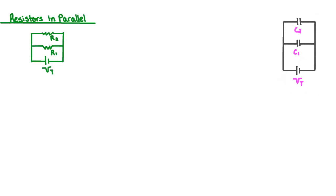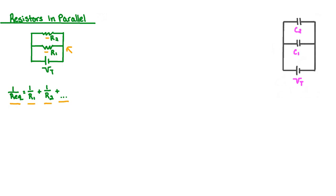We are going to see a lot of connections between capacitors in parallel and resistors in parallel. With that in mind, before we go over capacitors in parallel, let's do a quick recap of resistors in parallel. We should remember that when we have resistors in parallel, we find equivalent resistance by doing 1 over the equivalent resistance is equal to 1 over R1 plus 1 over R2, and so on for as many resistors as we have in parallel.